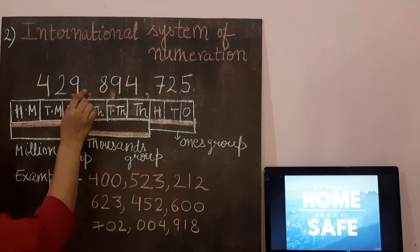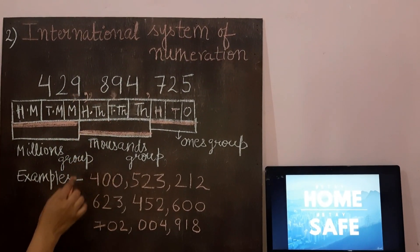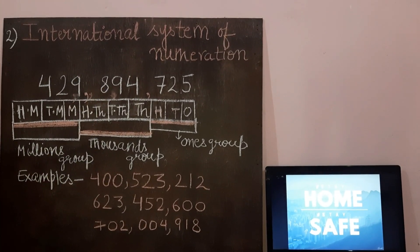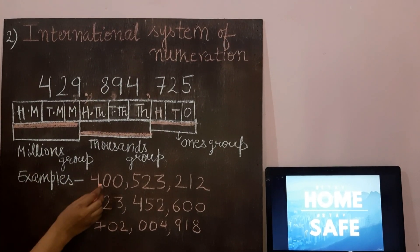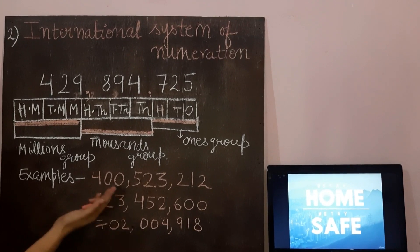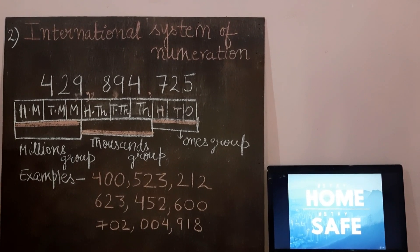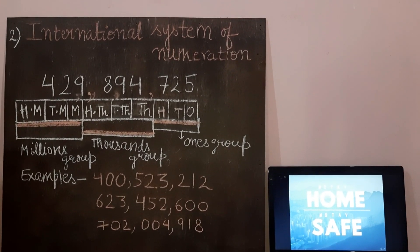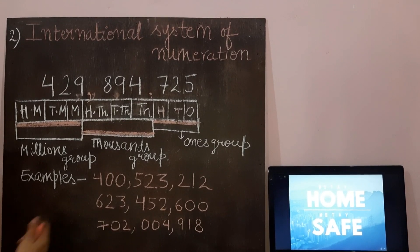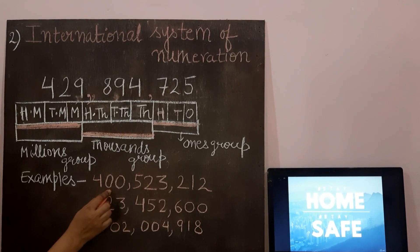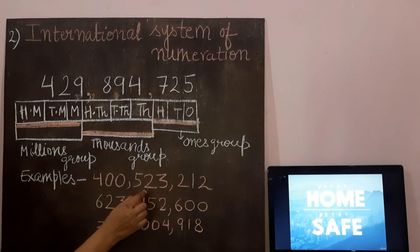Students, now let's take some examples on the international system of numeration. First one — I am giving you time to read the number. Time's up. Now I will do it for you. The number is 400,523,212.